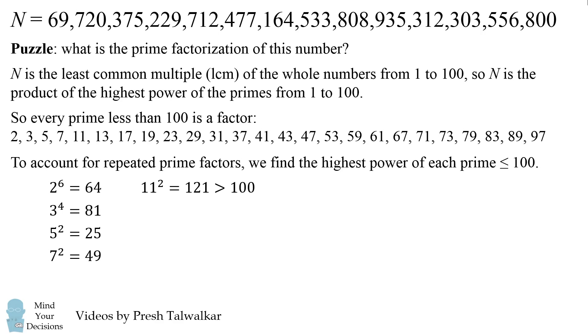And then the next prime, 11 squared, is larger than 100. So we don't have 2 factors of 11. Every other prime that's larger than 11 will have a square that exceeds 100. So we're done checking for repeated prime factors.